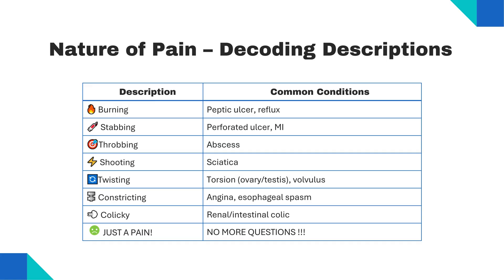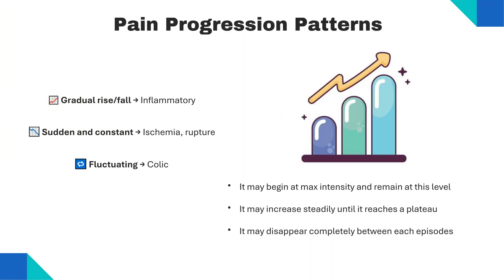The sensation often reflects the underlying mechanism. Sometimes patients simply describe 'just a pain' — in such cases, do not ask leading questions that make them fit their description to your suggestions, as this may be misleading. Observe how pain changes over time: gradual rise and fall suggests inflammatory conditions; sudden constant pain points to ischemia or rupture; pain that comes in waves is classic for colic. Pain patterns can begin at maximum intensity and remain there, or increase steadily to a plateau, or disappear completely between episodes.